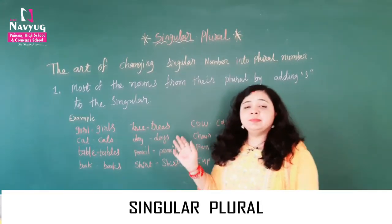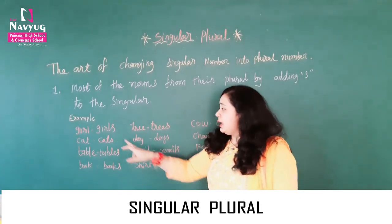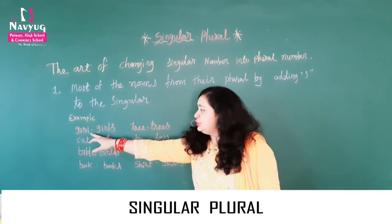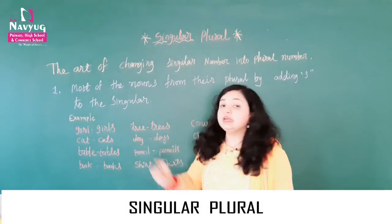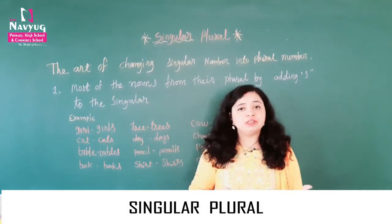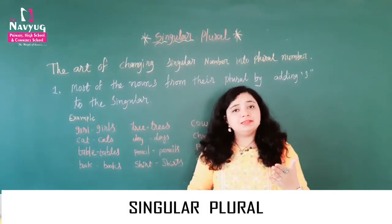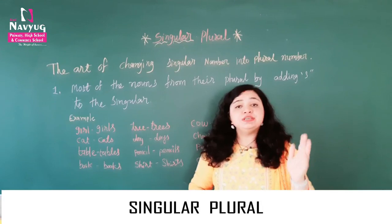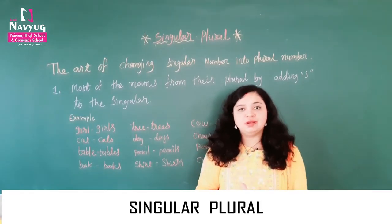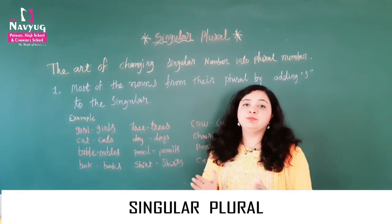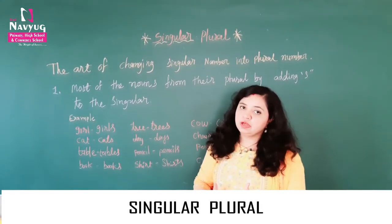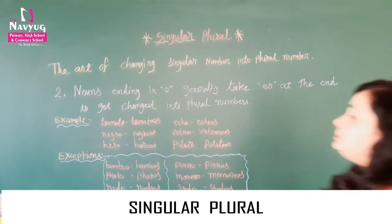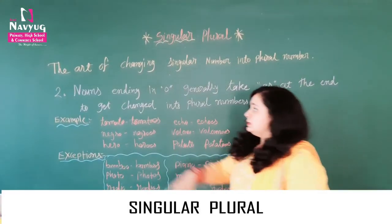So if you want to form the plural of a singular noun, you have to add S. That is rule number one. Rules number two.